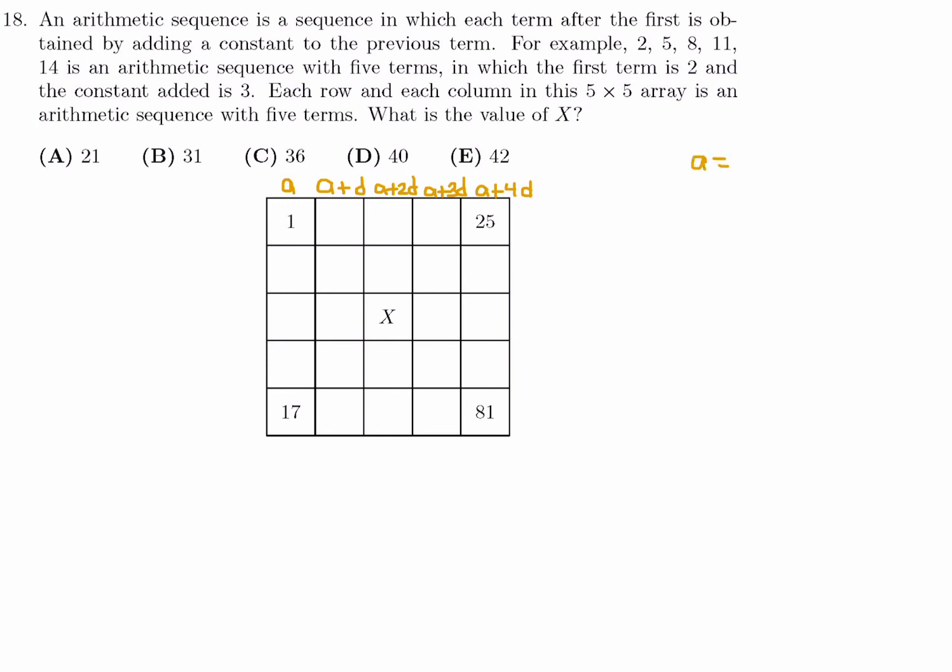So that means that A is 1, and A plus 4D is 25, in that row. No problem, I can now solve for D. A is 1, 4D is equal to 25, that means 4D is equal to 24, and therefore, D is 6. So I can plug this all in now. This will therefore be 7, this will be 13, and this will be 19.